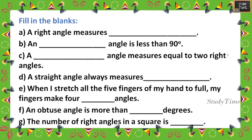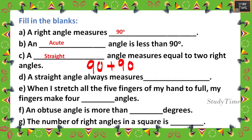Next, we'll discuss some questions from the textbook. Fill in the blanks: A right angle measures 90 degrees. A blank angle is less than 90 degrees — that is an acute angle. A blank angle measures equal to two right angles: 90 degrees plus 90 degrees equals 180 degrees.